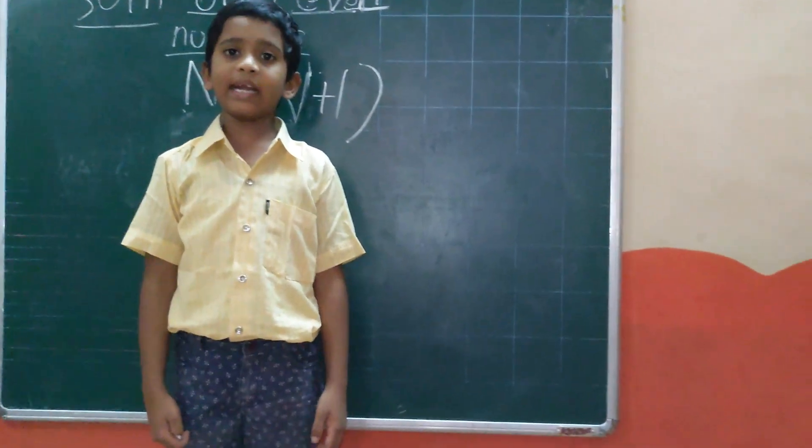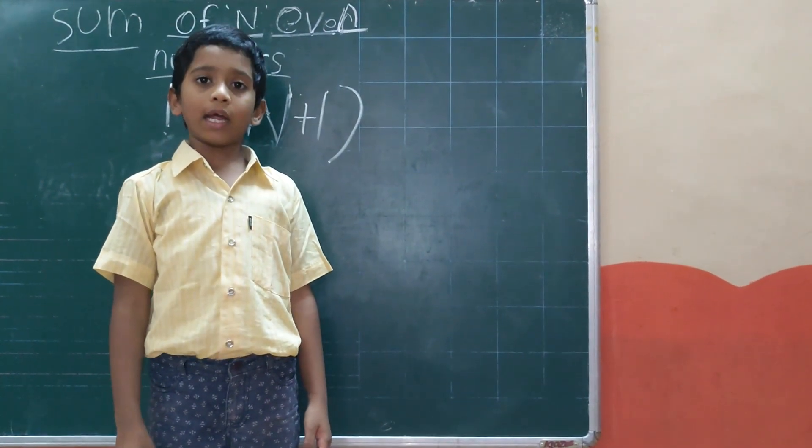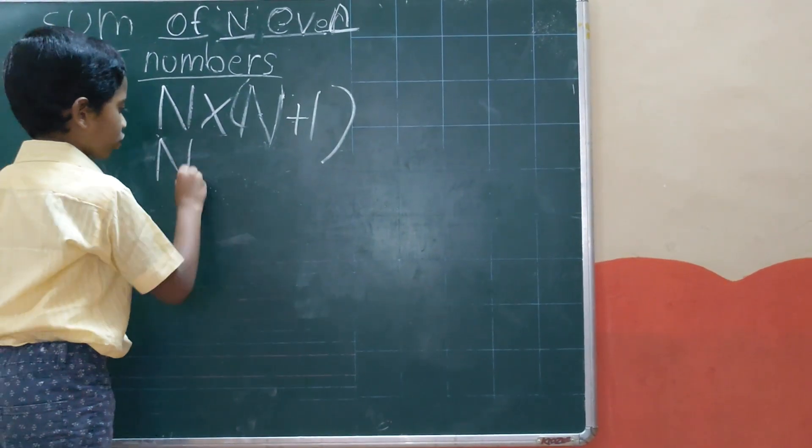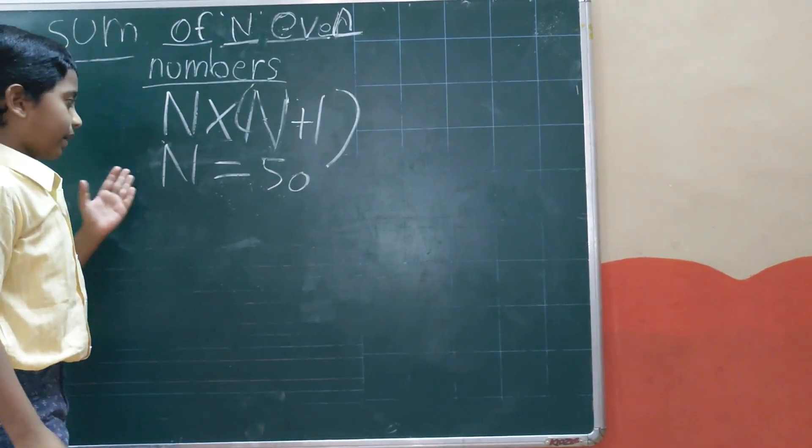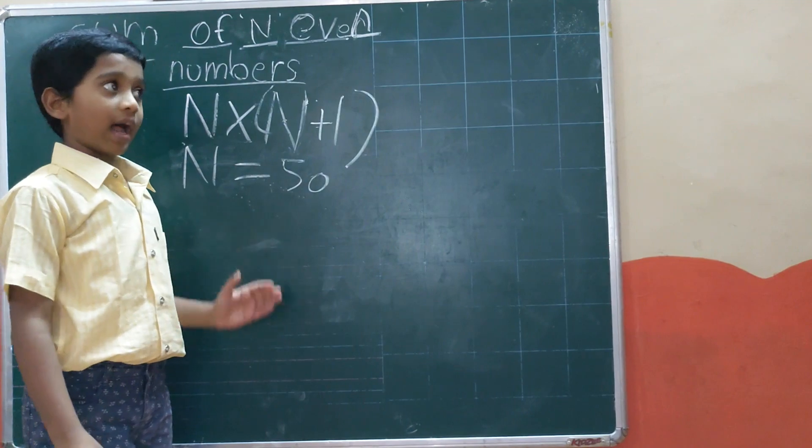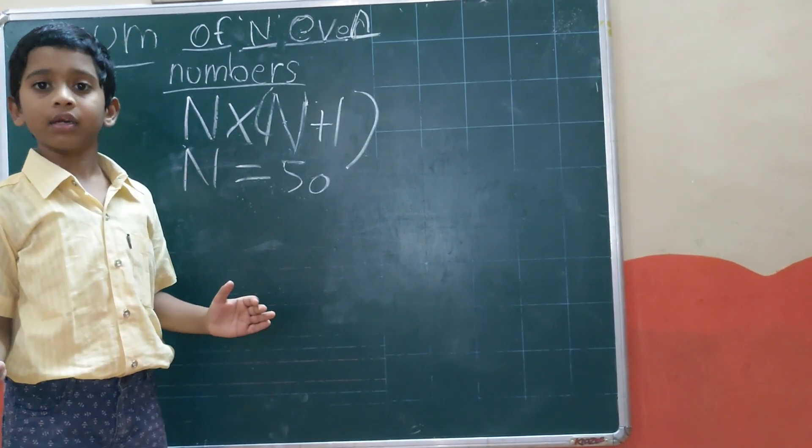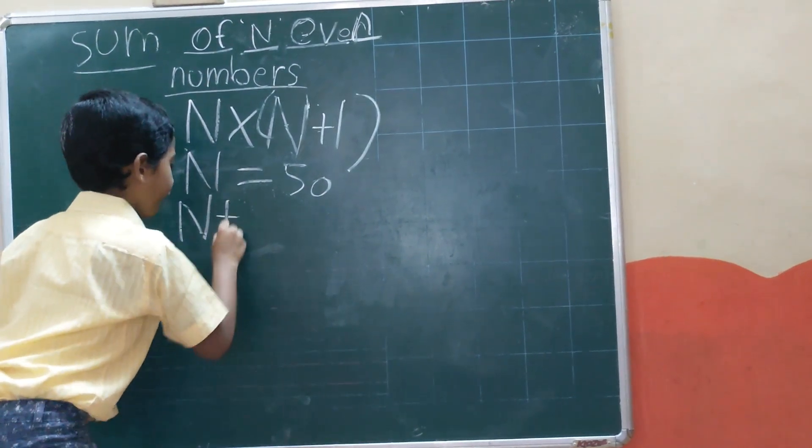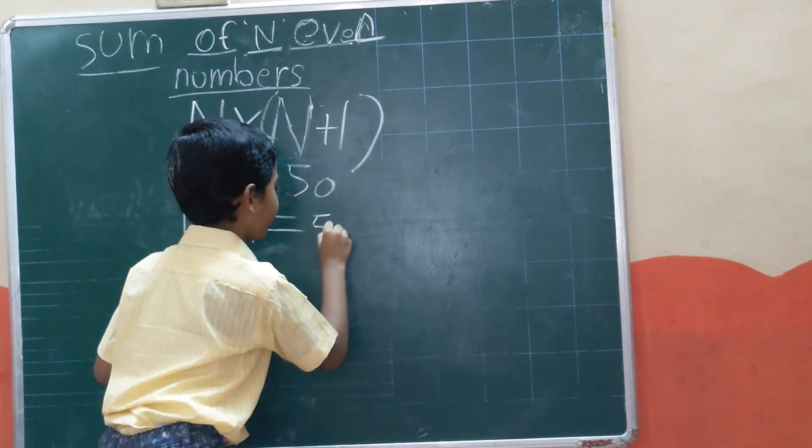The second example is summation of even numbers 1 to 100. Here n is equal to 50. Why? Because in 1 to 100, there are 50 even numbers.